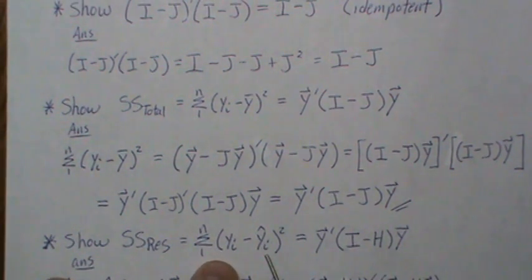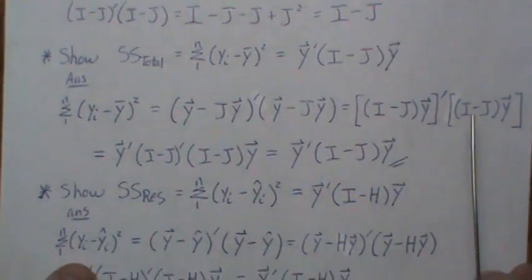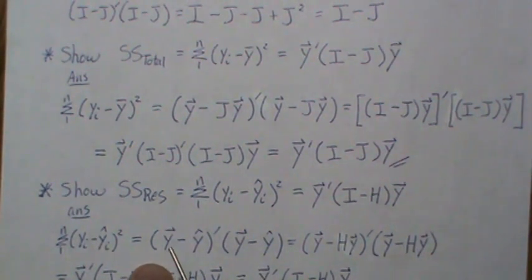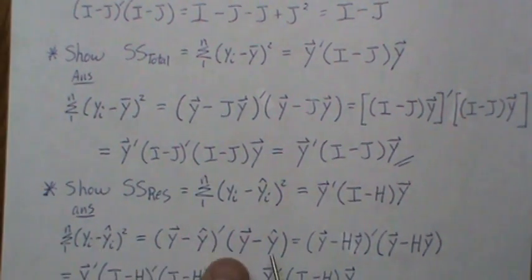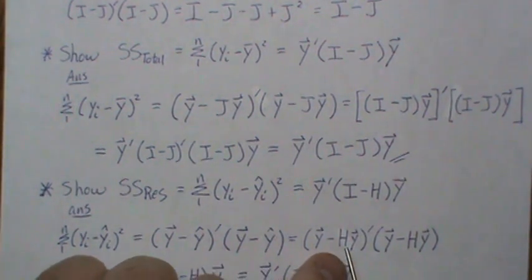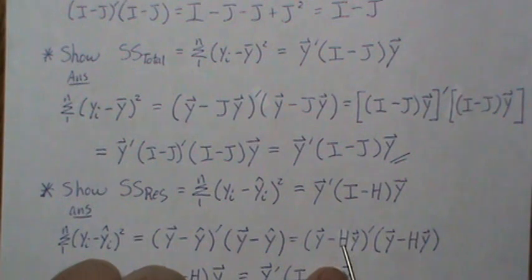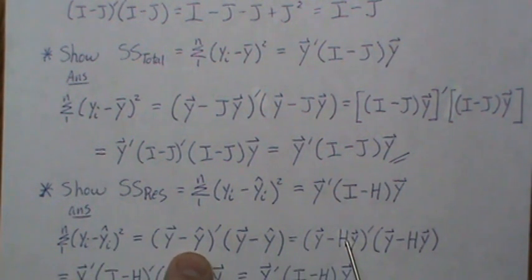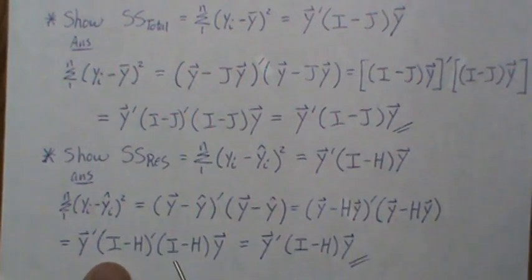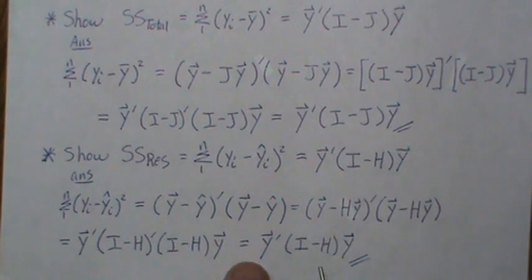The sum of squares residual can be written in matrix notation as y'(I−H)y. Starting from Σ(yᵢ − ŷᵢ)², in matrix notation this is (y − ŷ)'(y − ŷ). Since ŷ = Hy (the hat matrix), we have (y − Hy)'(y − Hy). Factoring out y gives y'(I−H)'(I−H)y. We showed this product equals I−H, so SS Residual = y'(I−H)y.